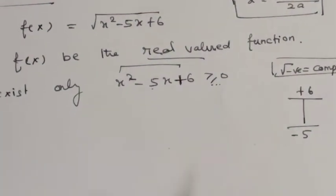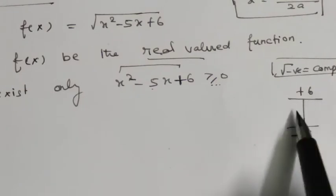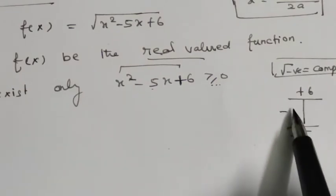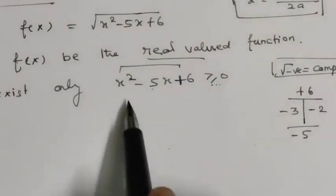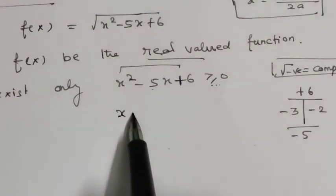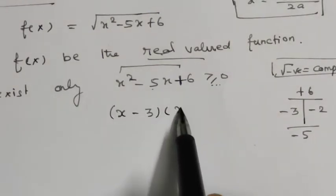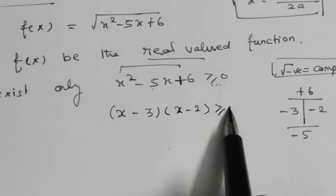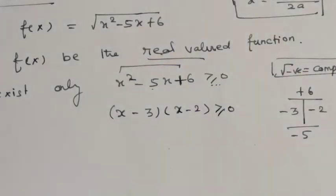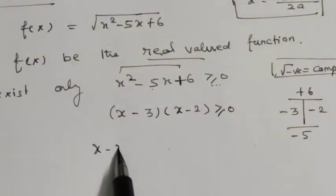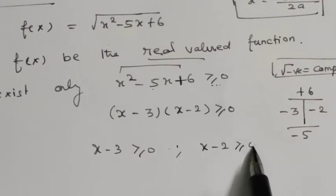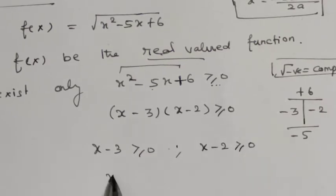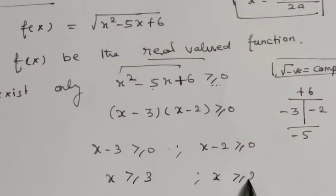We need two integer factors whose product is plus 6 and sum is minus 5. So x squared minus 5x plus 6 factors as x minus 3 into x minus 2 equals 0. One case: x minus 3 equals 0, giving x equals 3. The other: x minus 2 equals 0, giving x equals 2.